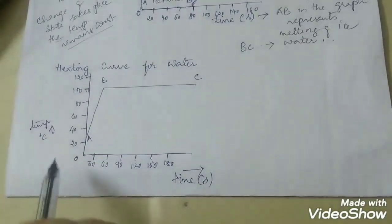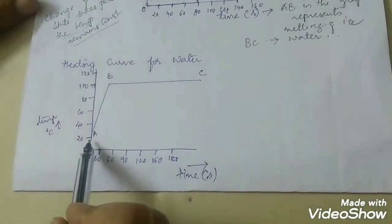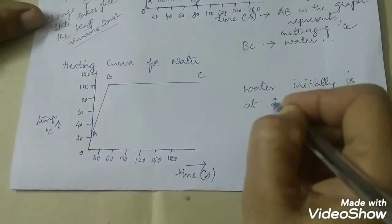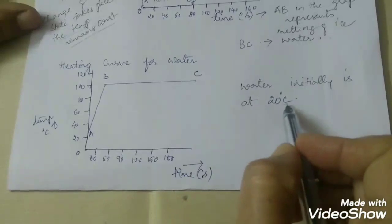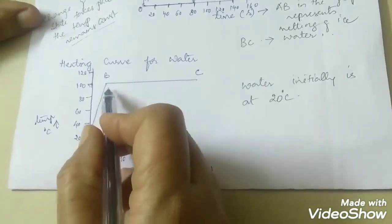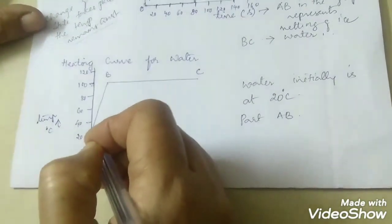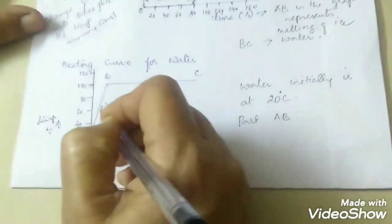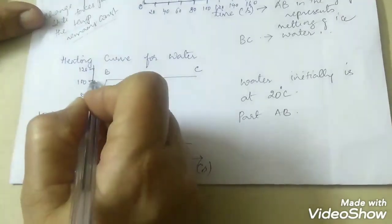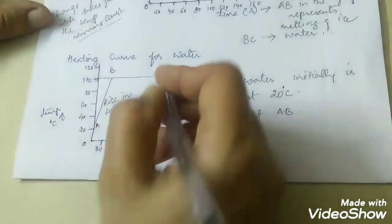Here is another temperature-time graph for the heating curve of water. I have taken water with an initial temperature of 20 degrees Celsius. When we start heating water at 20 degrees Celsius, in the beginning there will be a gradual rise in temperature, shown by part AB in the graph. Water at 20 degrees Celsius when heated first shows a rise in temperature up to 100 degrees Celsius. We know that at 100 degrees Celsius water starts boiling, so when the temperature reaches 100 degrees Celsius, water starts boiling.